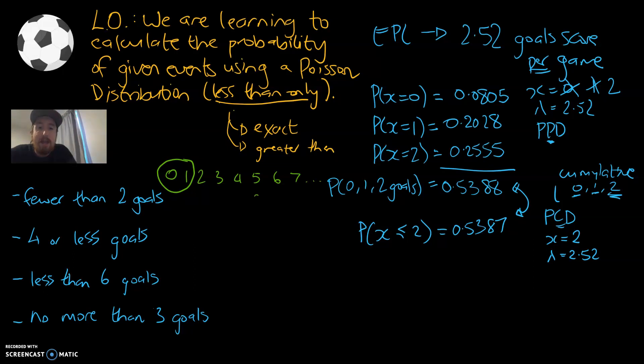That means x is going to be equal to one, and lambda is going to be 2.52. Because we're interested in multiple values, we've now got two values circled, we will be using the PCD mode because we want to accumulate or add together the zero and the one. On our graphics calculator, we're going to put in one and 2.52 as the mean. That means the probability of fewer than two, so I've got the notation less than two, would be 0.2832.